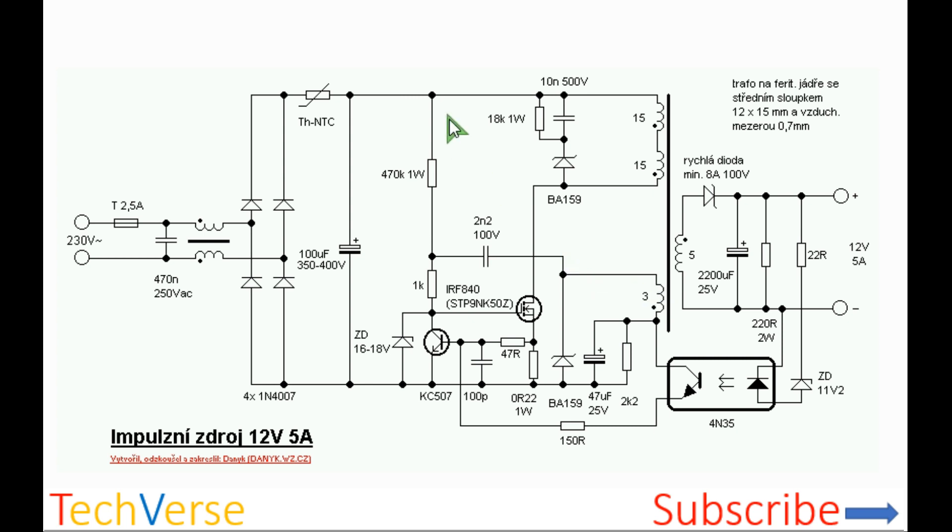The way this works is that some current will find its path to the gate of the MOSFET through this high resistance biasing resistor, and the MOSFET will conduct. This will cause current to ramp up through the primary winding.